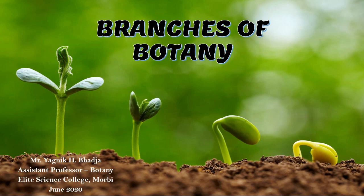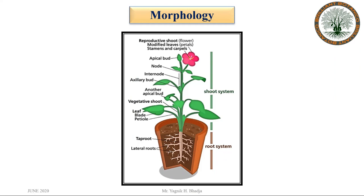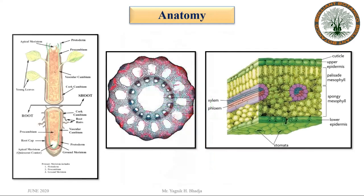On this basis, many branches are defined. The first branch is morphology. In morphology, we study the external structure of the plant — leaves, flowers, stem, fruit, etc. Another branch is anatomy. In anatomy, we study the internal structure of the plant.